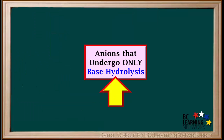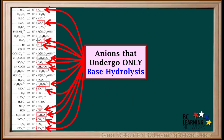Now for anions. Anions are on the right side of the acid table. We start by looking at anions that undergo only base hydrolysis — excluding the spectator ions on the top right of this table, these are all the ions on the right with a negative charge whose formulas do not start with an H.